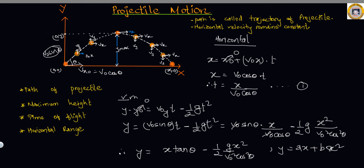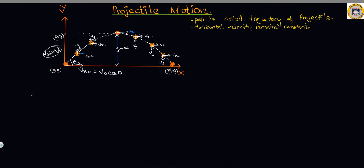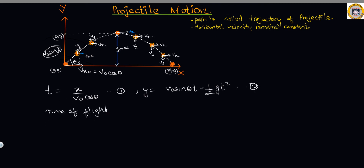Now let us find the maximum height, time of flight, and horizontal range. Recalling our equations: equation one is t equals x over v-naught cosine theta, and equation two is y equals v-naught sine theta times t minus one-half g t-squared. Let me now address the time of flight.